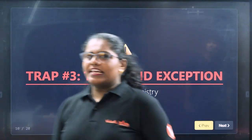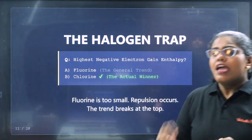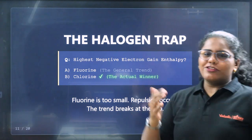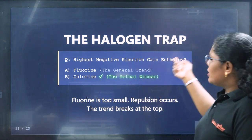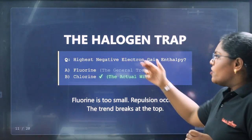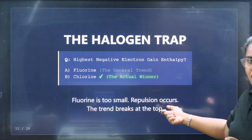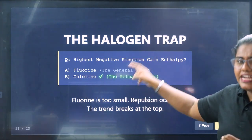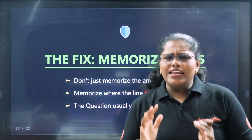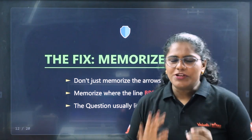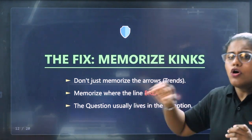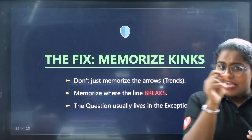Trap number 3 is the Trend Exception trap. Even if you know the general trend, there will be exceptions. For example, halogens: fluorine is expected to be the most electronegative, but its electron affinity does not follow the trend — it is actually lower than chlorine's due to its very small atomic size. You must memorize the exceptions, not just the general trend.